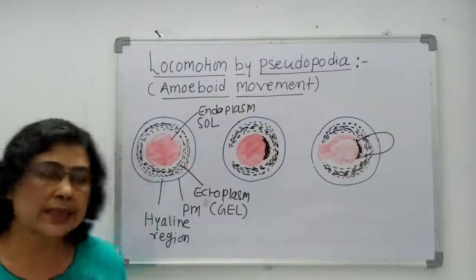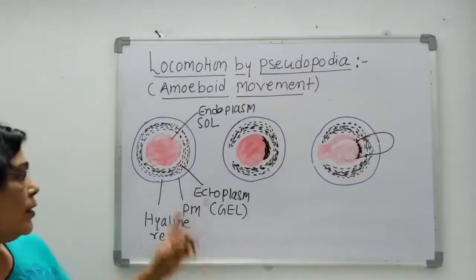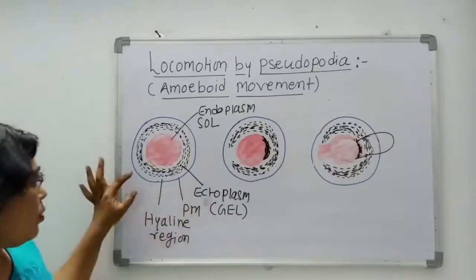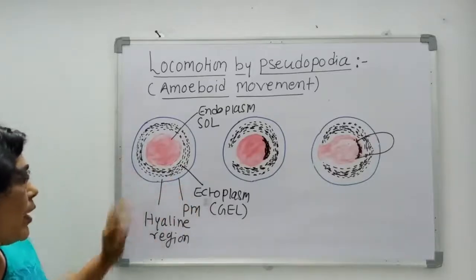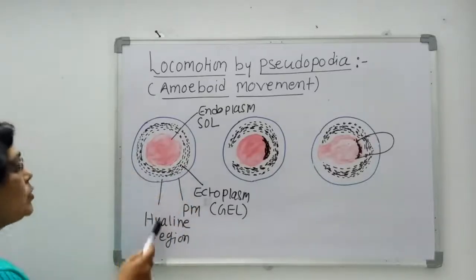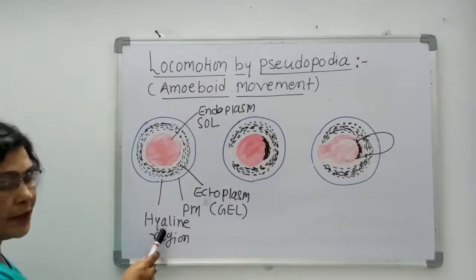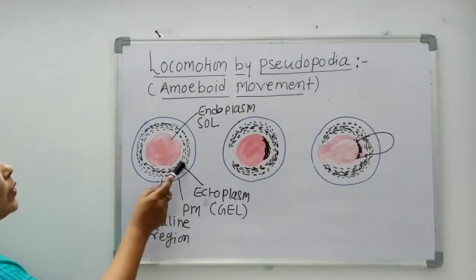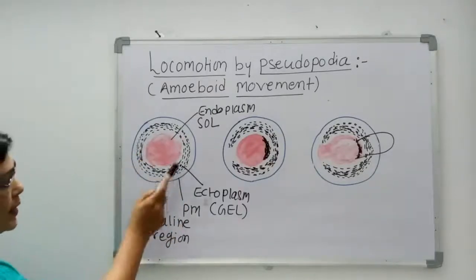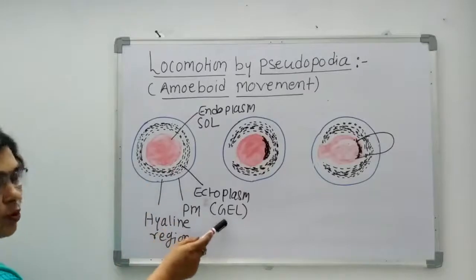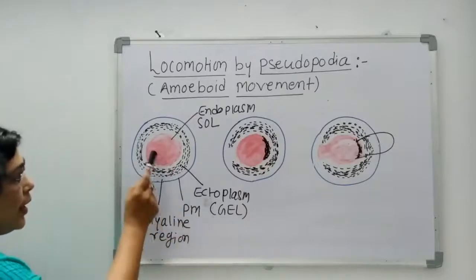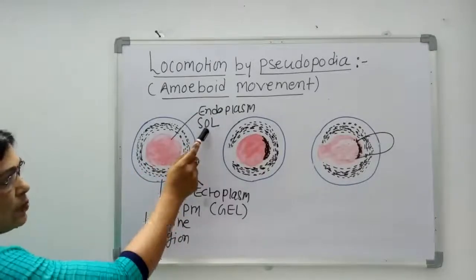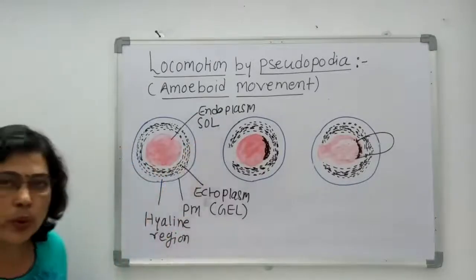Yahan pe pehli cheez hum samajh lete hain ki kahan pe kya hai. Toh sabse bahar mein plasma membrane hai. Usse lagkar jo clear zone hai — this clear zone is the hyaline region. Uske baad andar jo ectoplasm hai, jo black dotted line se nikala hua hai, usse bolenge gel. Aur reddish color se jo nikala hua hai woh endoplasm hai, usse bolenge sol.